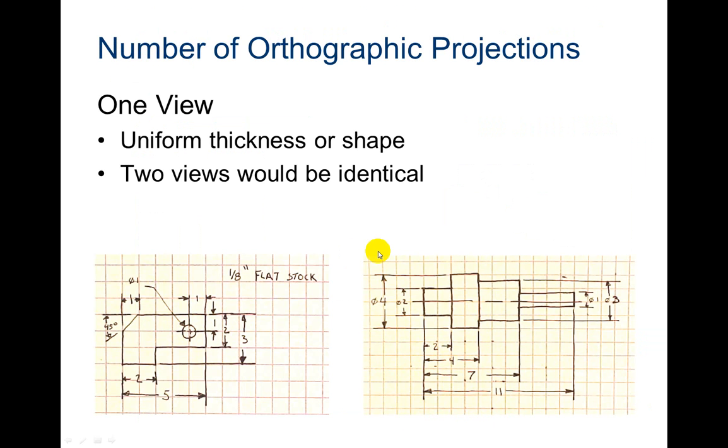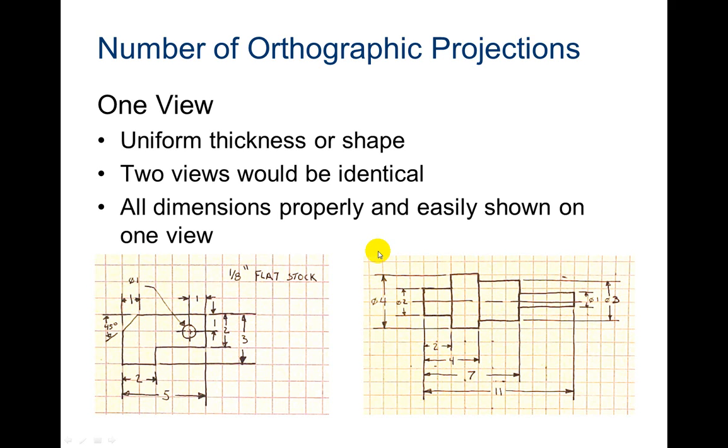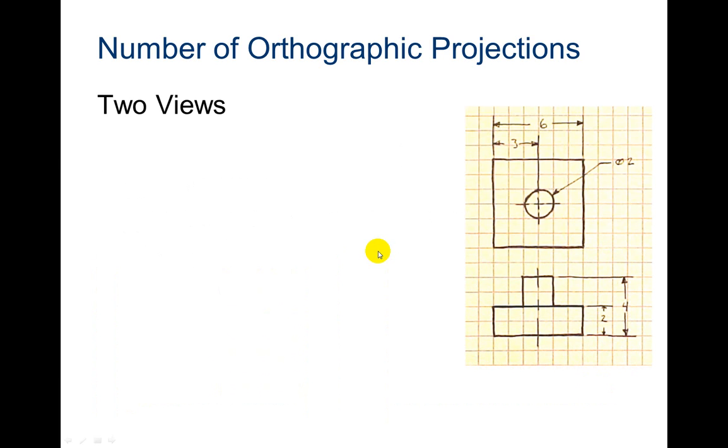So how many views do you need to show? Do you need to show three? Do you need to show all six? Or do you just need to do one? So if you have one view that is uniform thickness and shape for the object, and two views would be identical, then you only have to show that one view. By all dimensions properly and easily shown on one view, you don't have to draw extra views. Only one view is going to be required.